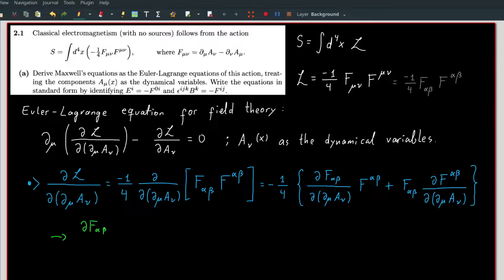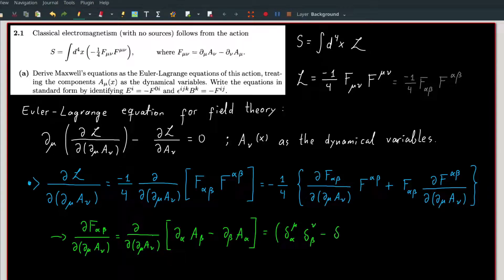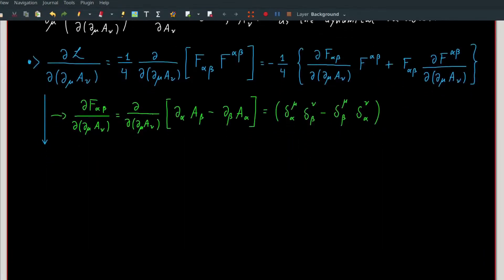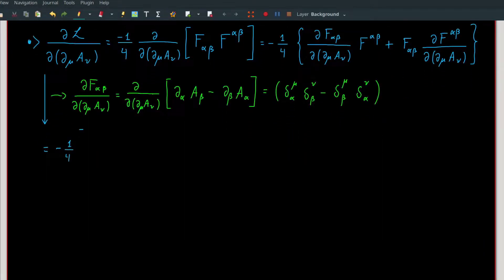Using the definition of f, we can find the derivative of f^{αβ} with respect to ∂_μ A_ν to be the products of Kronecker delta as follows. We can now substitute in the derivative of f into the derivative of L.